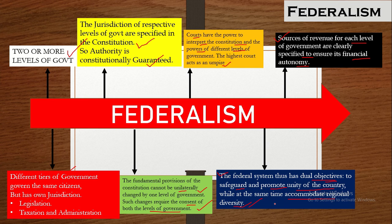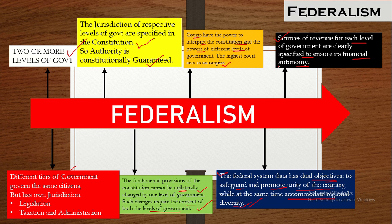So these are the key features of federalism. One: two or more levels of government. Two: different tiers of government govern the same citizens with their own jurisdiction. Three: constitutional provisions are guaranteed. Four: no fundamental provisions of the constitution can be changed unilaterally without the consent of other governments. Five: courts act as an umpire in disputes. Six: sources of revenue are guaranteed to ensure financial autonomy. Seven: the federal system has dual objectives — to safeguard and promote unity while accommodating regional diversity.